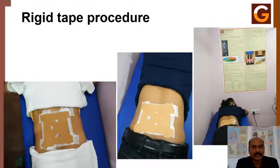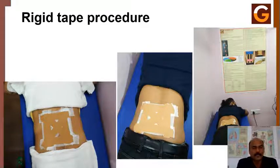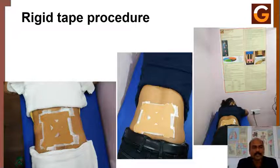For rigid tape application, this non-elastic tape was applied to the lumbosacral region with two anchoring strips horizontally at the top and bottom and two vertical strips applied laterally. One X-strip was formed between the anchoring strips, positioned exactly at the L2–L3 region, which mainly provides support to the lower back region.